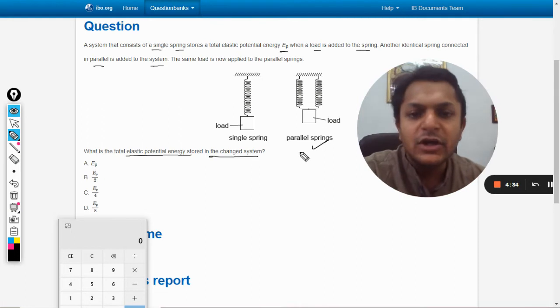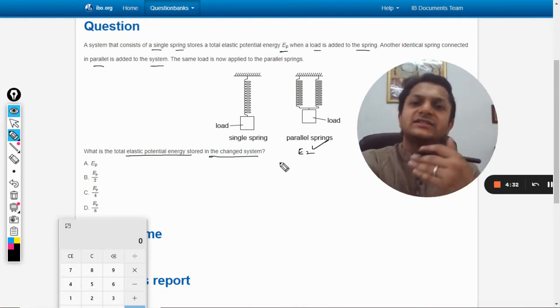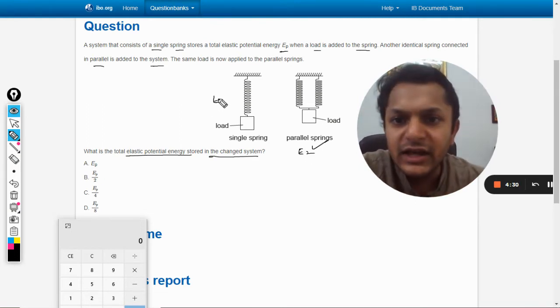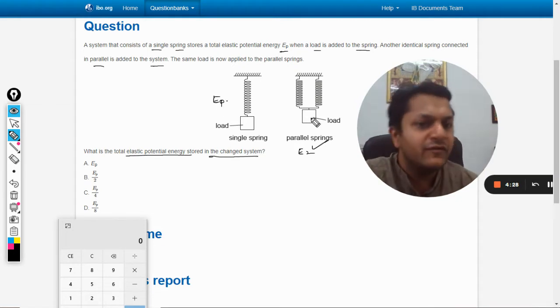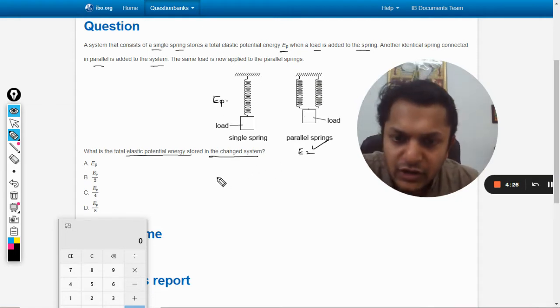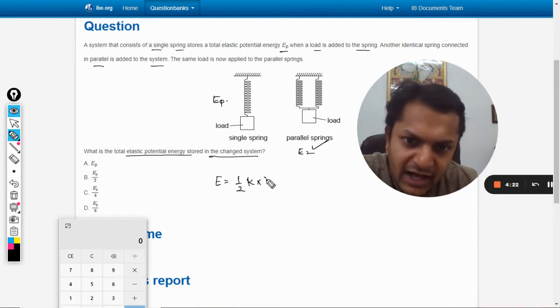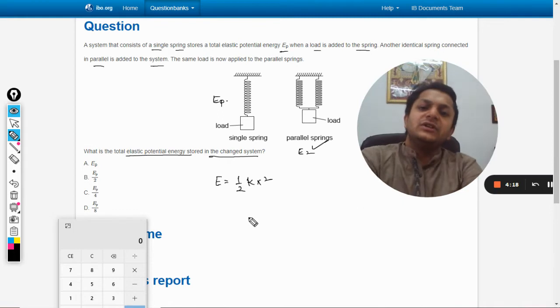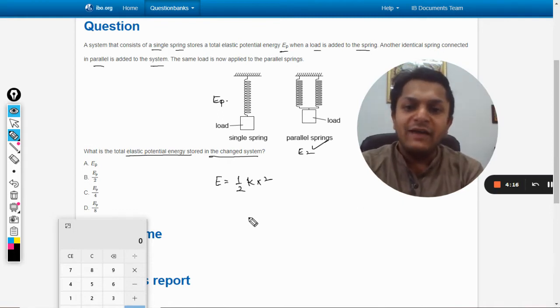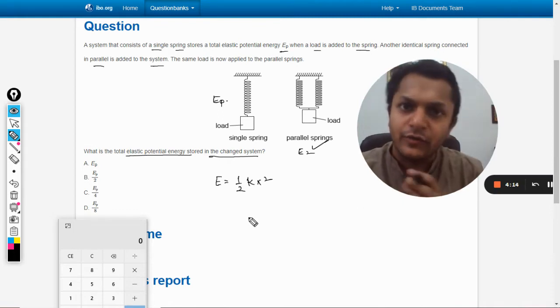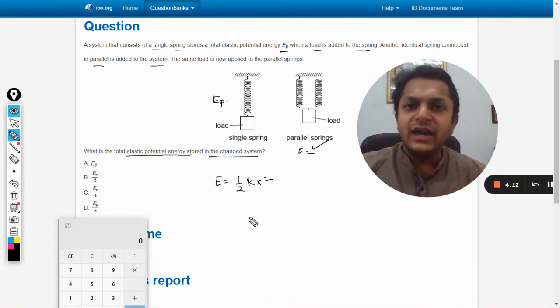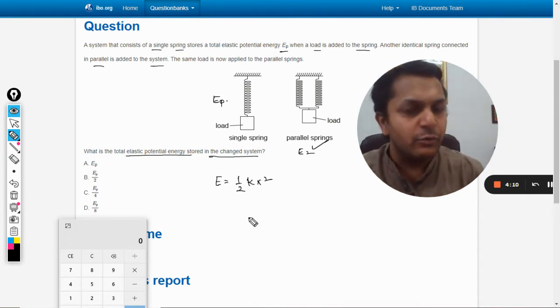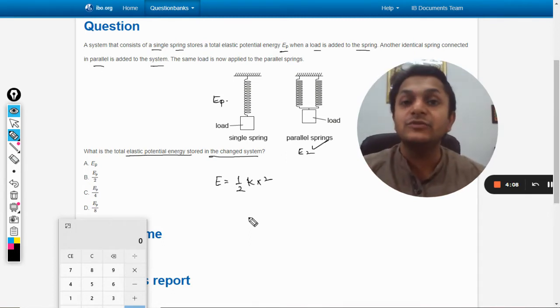In this system, what is the new energy that is stored? So let's say the energy stored here is E_p. We have to find that. First of all, the formula for the energy is given by half kx squared. So in this question, instead of having the formula in terms of k and x, we can create another formula for the energy which will be in terms of the applied force or the weight or the load that is applied and the spring constant.